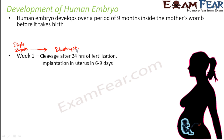The blastocyst has two layers: one outer layer and one inner cell mass. The outer layer attaches the entire fetus to the endometrium — the innermost layer of the uterus. The inner cell mass undergoes many more divisions to form the embryo. That is how the entire process takes place.